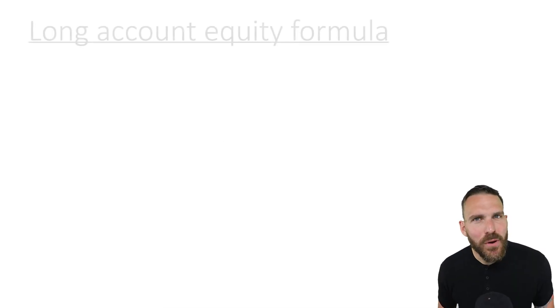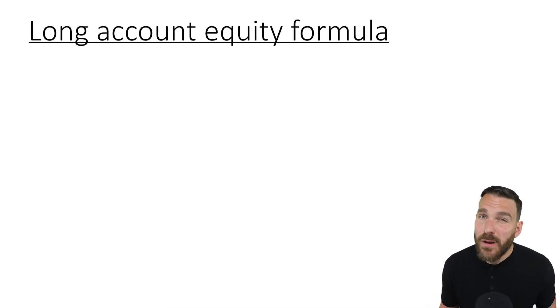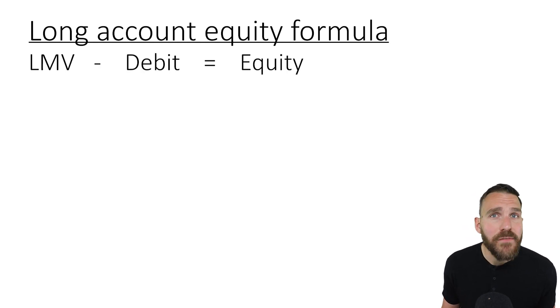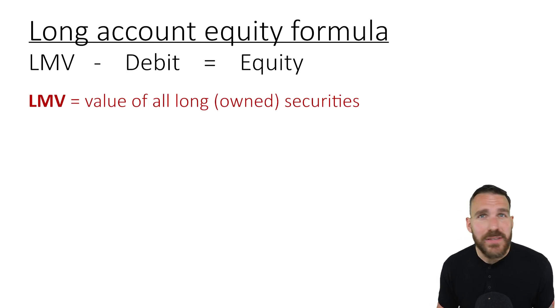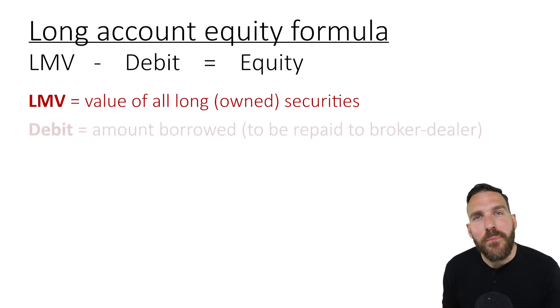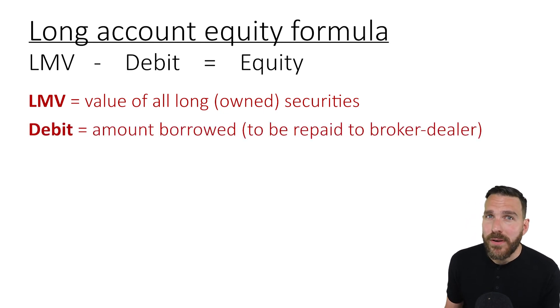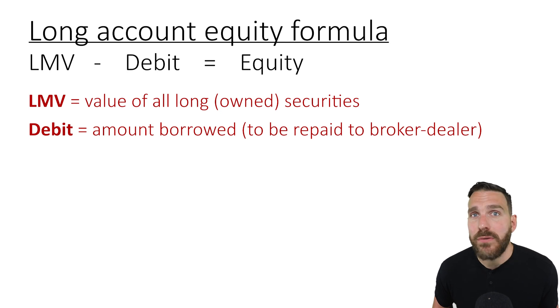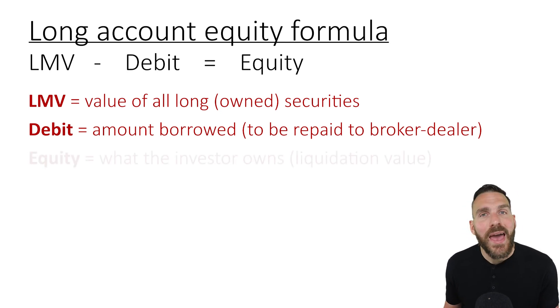The term equity is often related to ownership. What is my equity in a margin account? What we're really asking is, what do I own in that margin account? The long margin equity formula: a person can determine their equity in a long account by taking their long market value — LMV — which is the value of all the stocks and securities in the portfolio, and subtracting the debit balance. The debit balance represents what the investor borrowed from the broker-dealer — money they owe and will have to pay back. LMV minus the debit equals the investor's equity.